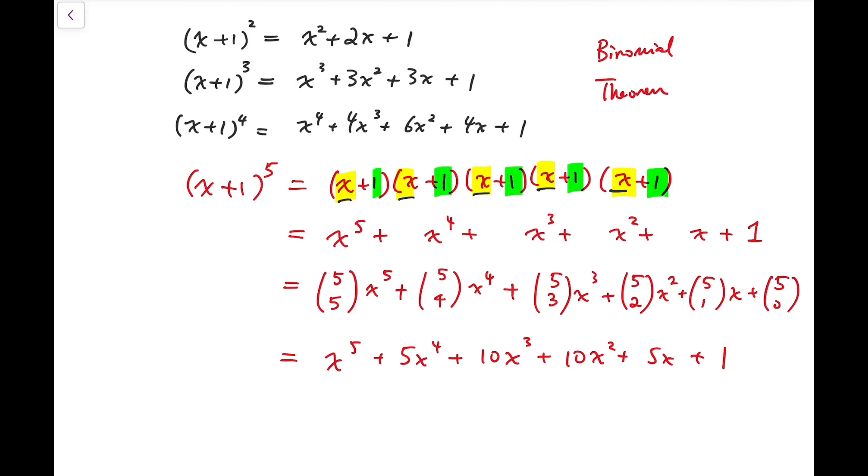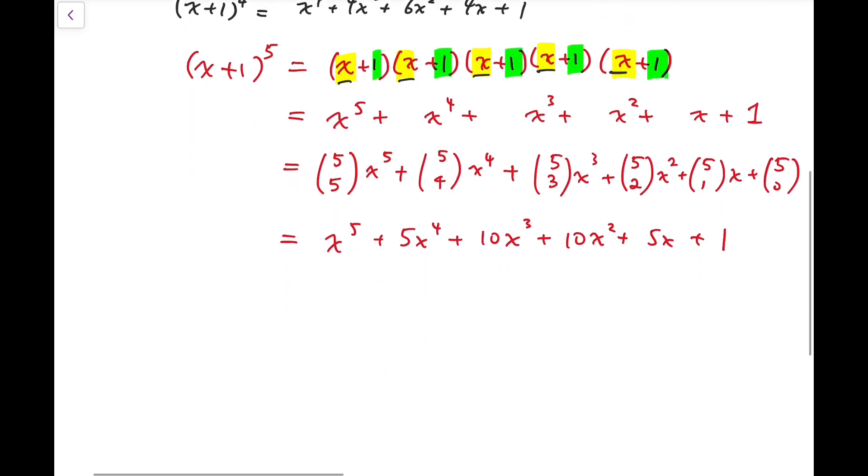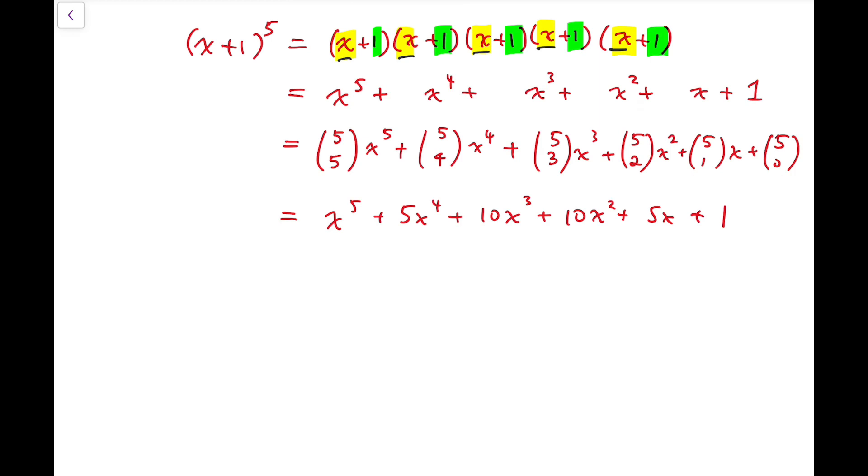Now using what we've got, we can deduce that the expansion of x plus 1 all to the power 20 will be something like 20 choose 20 times x to the power 20 plus 20 choose 19 times x to the power 19.